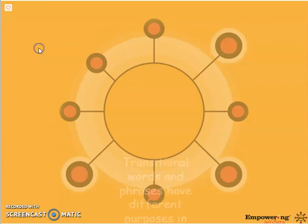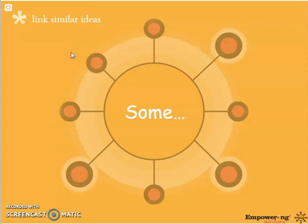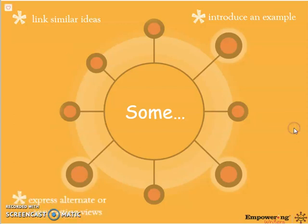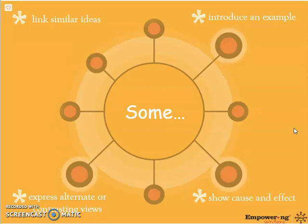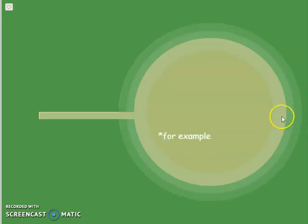Some of these transitional words are going to be used for different purposes. Some of them will link ideas to other ideas that are similar, or they will be used to introduce an example. Transitional phrases can also be used to express alternative or contrasting views, and lastly they can be used to show cause and effect or chronological order. You can say like first, then, next, last, or in conclusion to show that you're at the end of a conversation or the end of an argument. Let's look deeper into these things.